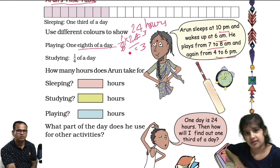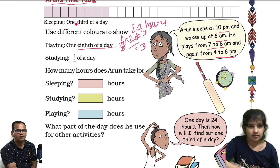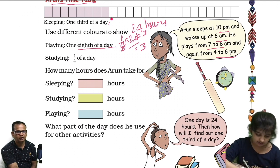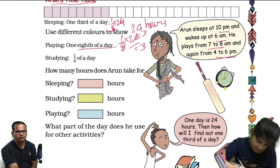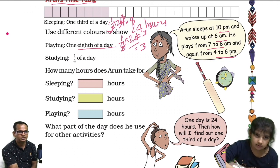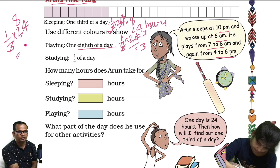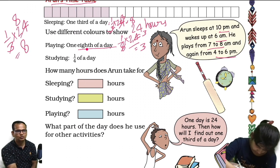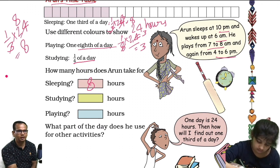Now sleeping: sleeping is one third of a day. One third of 24 — that is 24 divided by 3 — equals 8 hours. So Arun sleeps for 8 hours. If I calculate this: one third of 24 is nothing but 24 divided by 3, which is 8 hours.